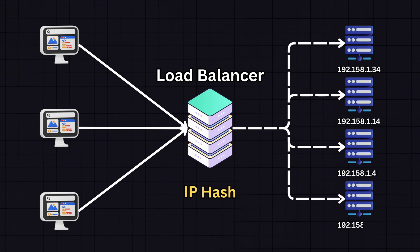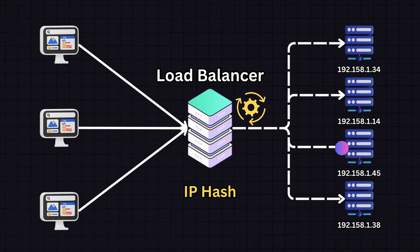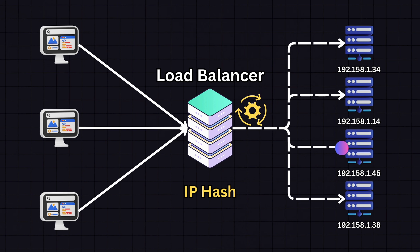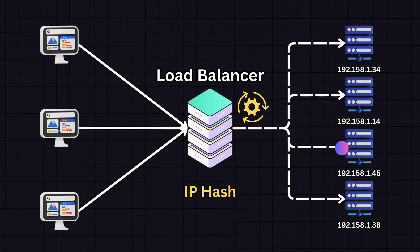Next is IP hashing, which determines which server receives the request based on the hash of the client's IP address. This ensures a client consistently connects to the same server, and it's useful for session persistence in applications where that consistency is important.